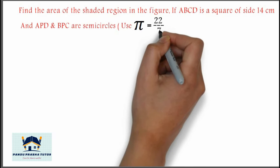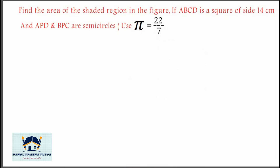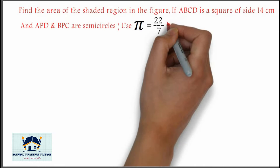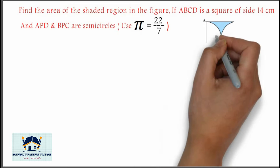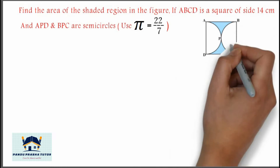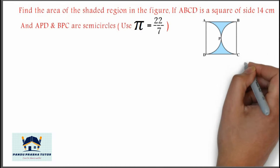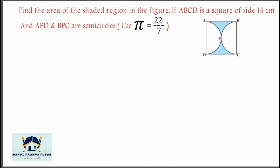We have to use only the given value. If π is given as 3.14, then use it. Here, π is equal to 22 divided by 7 is given.